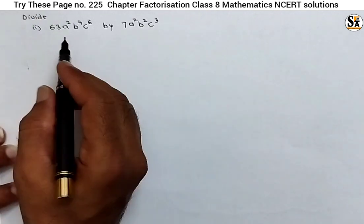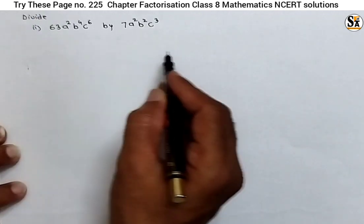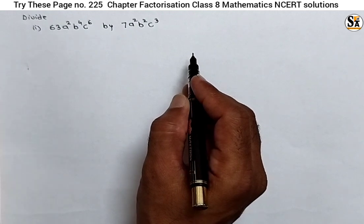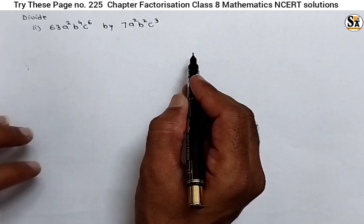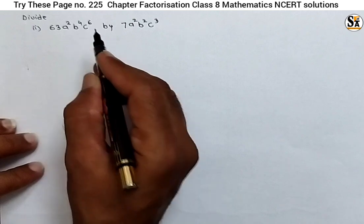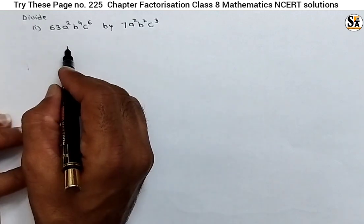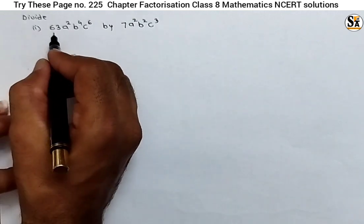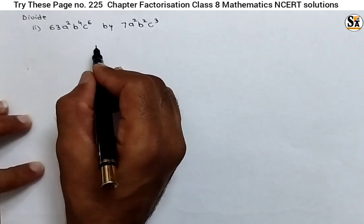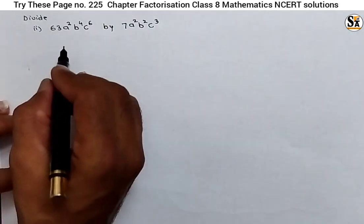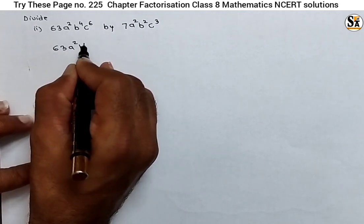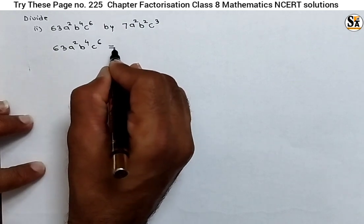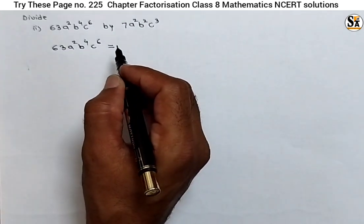Now here there are two options: follow the basic steps, or you can take the common factors in such a way that both are common in the numerator and denominator. Here we will follow the basic steps — make the prime factors or irreducible factors of these expressions: 63·a²·b⁴·c⁶.